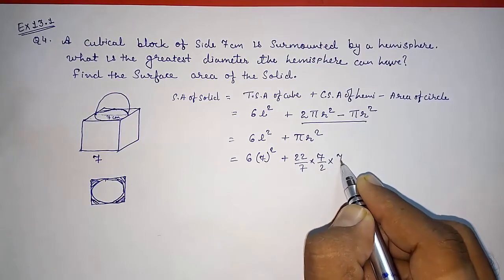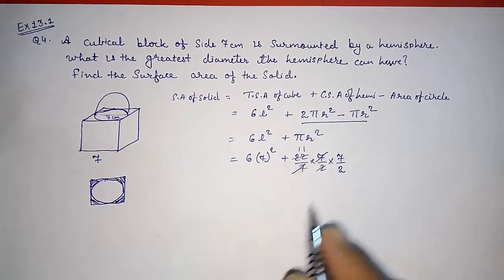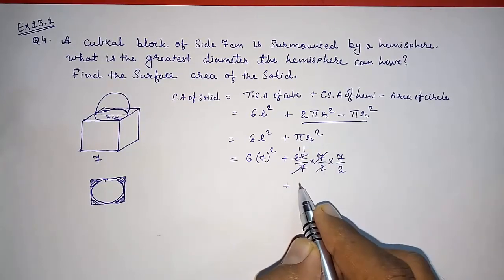2 times 7/2 into 7/2. This 7 and 7 get cancelled to 1. This will be 11, so here you will get 77/2.